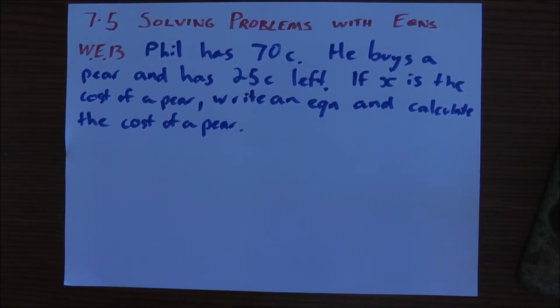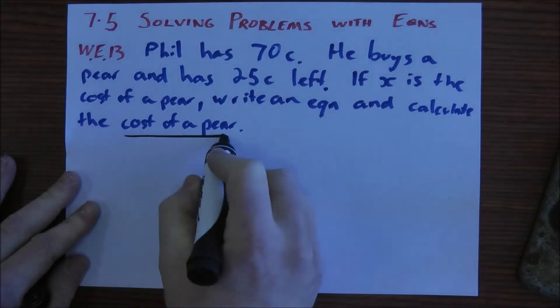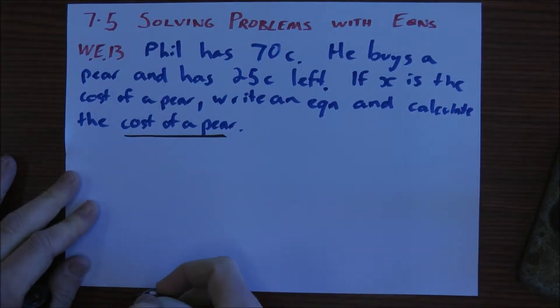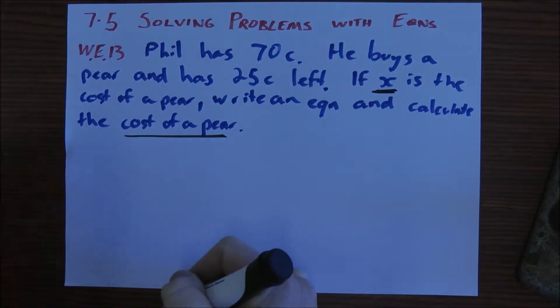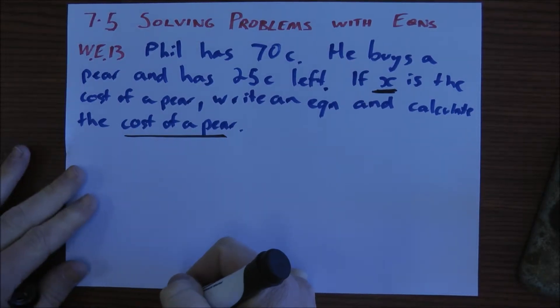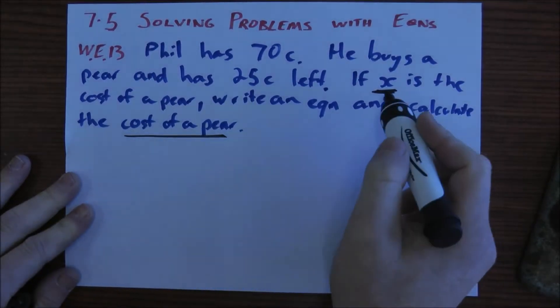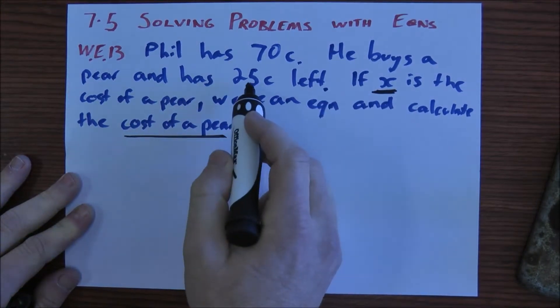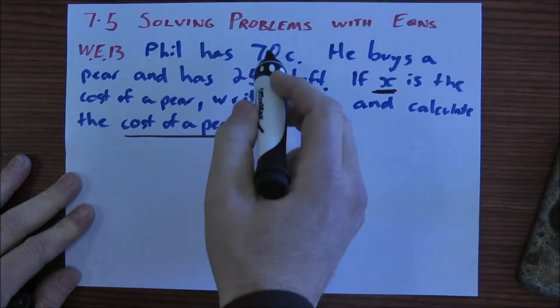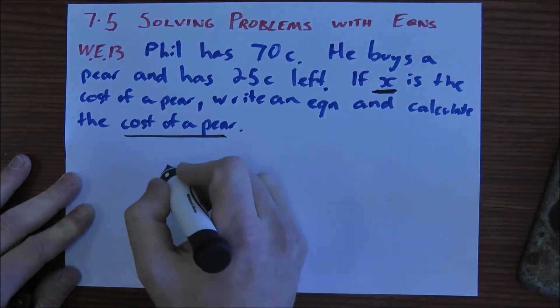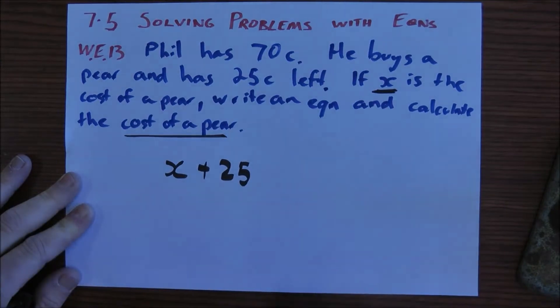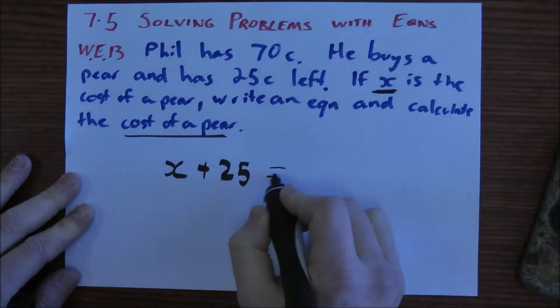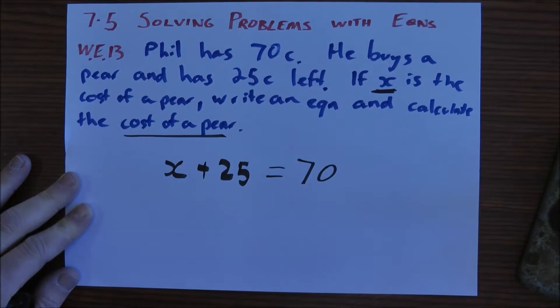So what we actually need to find out is the cost of the pear. First thing we've got to do is work out what our variable is going to be. Now the question tells us that X is the cost of a pear. That's our variable. We know that we bought a pear and we had 25 cents left over and we started with 70 cents.